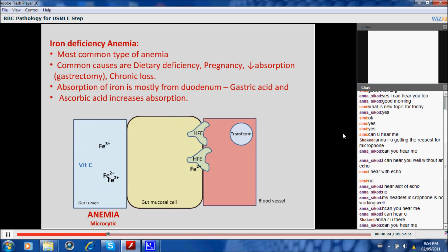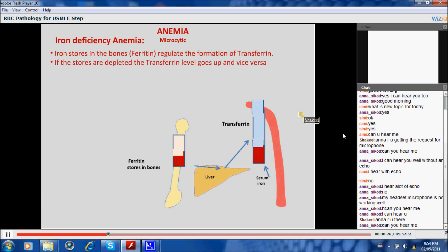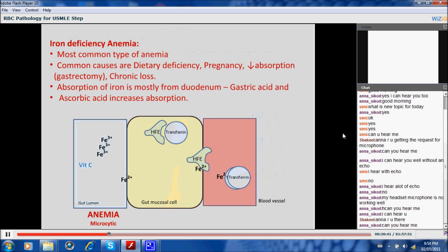So transferrin, in other words, is the total iron binding capacity, right? Yes, transferrin is a protein actually. It is a protein. So the body says, okay, I will manufacture more transferrin in order to get more iron. But it depends that the iron is there or not. If the iron is not there, there will be no saturation or less saturation.